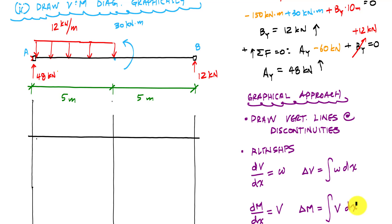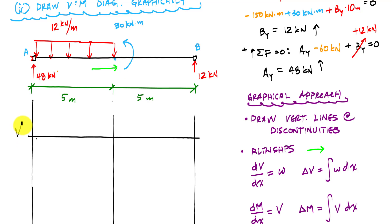These relationships were derived for a coordinate system on the beam — essentially they hold when you go left to right. So we will go left to right. When in doubt, just go left to right. This will be the shear diagram.